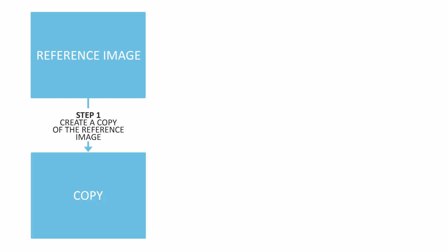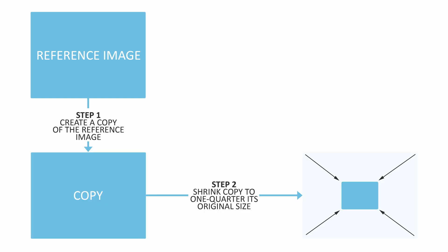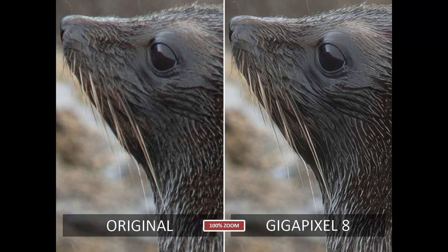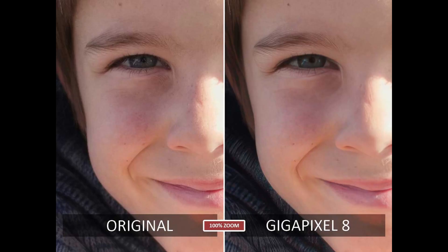We then export our image and move on to the next one. It's nice to know that this exported image is a copy — your original image will remain intact. So having determined that Gigapixel 8 is straightforward to use, let's find out how good it is. The way I like to test upscalers is to begin with a reference image, take a copy of that reference image, shrink it fourfold to 25% of its original size, then use an upscaler such as Gigapixel 8 to increase that image by fourfold, restoring the copy to its original size. We can then measure the effectiveness by comparing the upscaled result against our original reference image.